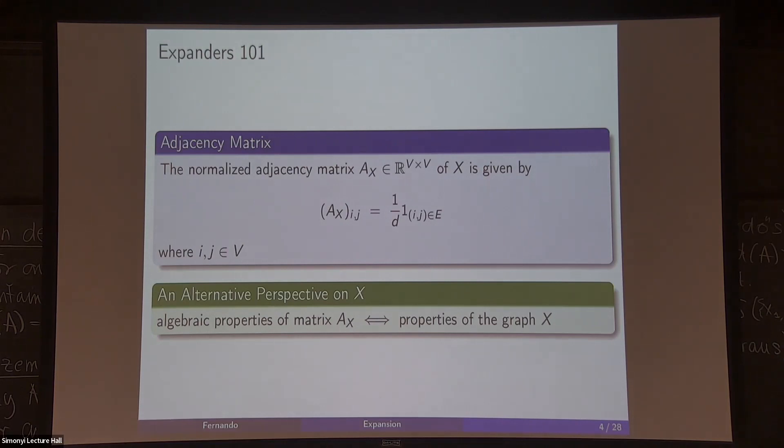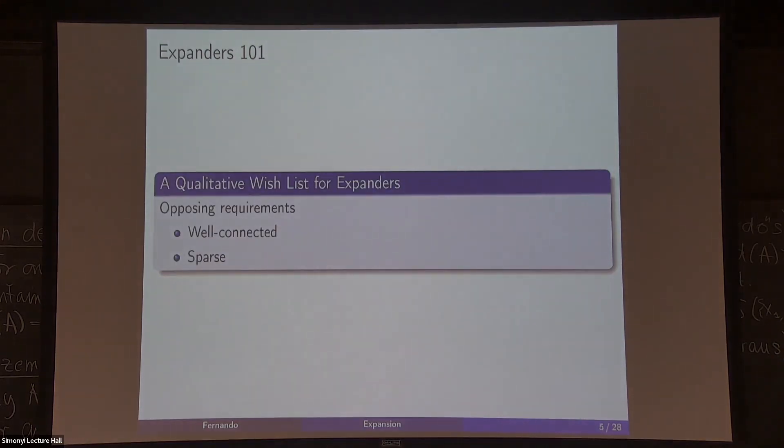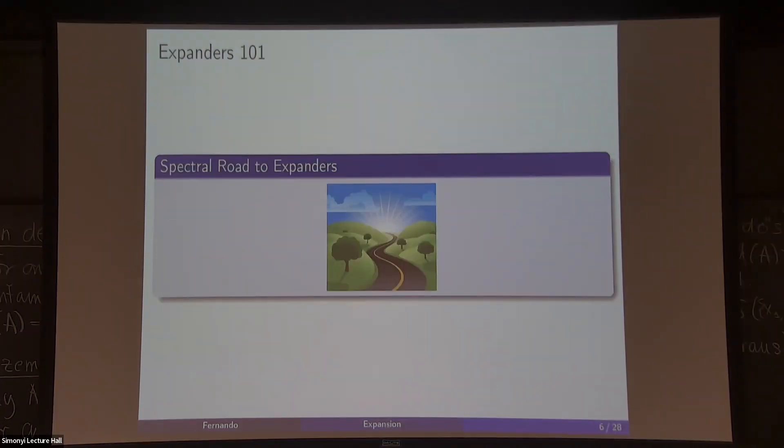At a very qualitative level, an expander tries to combine two opposing properties. You want something to be very well connected and at the same time to be quite sparse. At the qualitative level this is what we want. There are many ways of playing around with expanders, and we are going to take this spectral world. You can play in terms of combinatorics and also in terms of probability, but let's focus on the spectrum part.